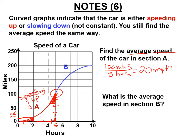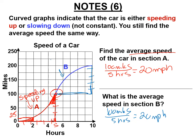In section B, you also need to do the whole section. The rise is four boxes or 100 miles, and it's five hours again — the same 20 miles per hour average. But in section B that is what slowing down looks like, or decreasing speed. When it bends that way, it was going fast at the beginning and very slowly at the end.